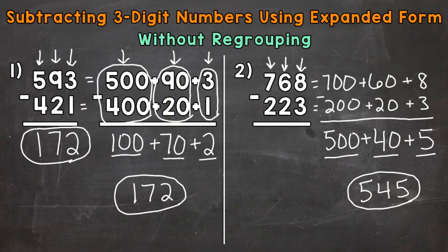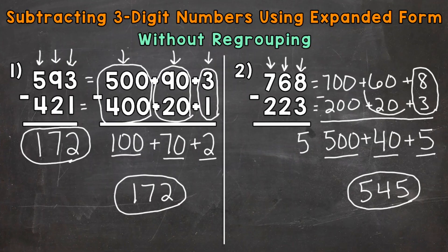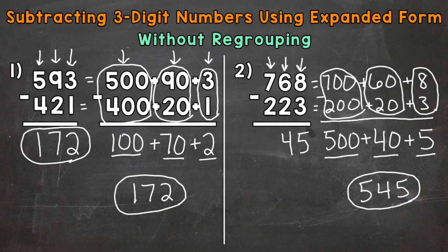Let's solve it to the left as well. Start with the ones: 8 minus 3, represented right here — we get a five in the ones place. Move to the tens: 6 tens minus 2 tens, those values are represented right here — 6 minus 2 gives us a 4 in the tens. And then lastly the hundreds: 7 hundreds minus 2 hundreds, those values are right here — 7 minus 2 gives us a 5 in the hundreds place. So we get the same answer over there as well.